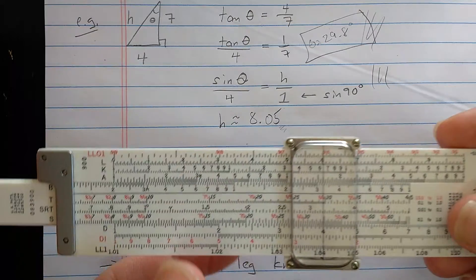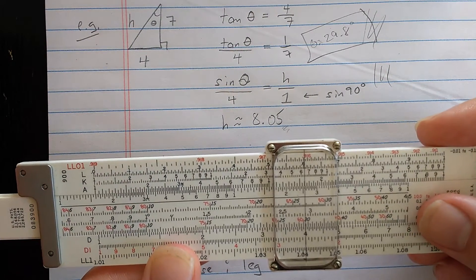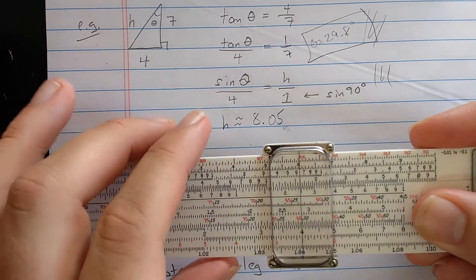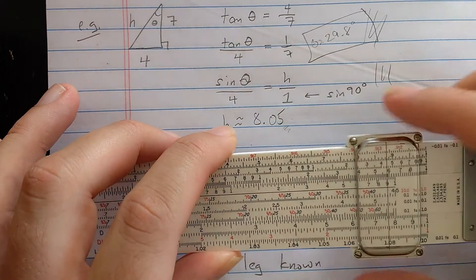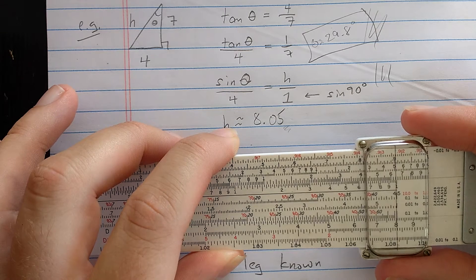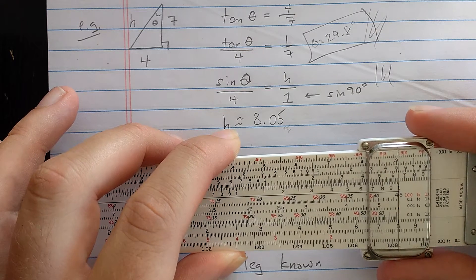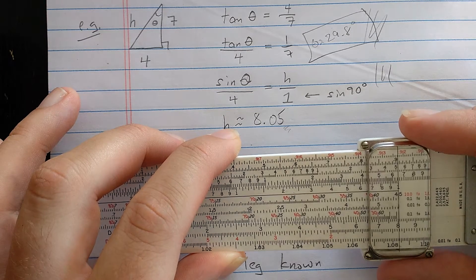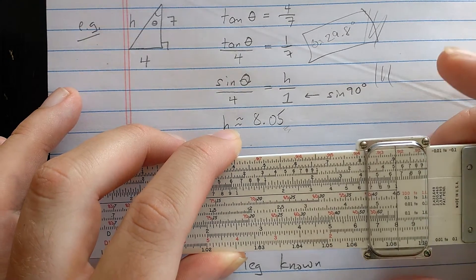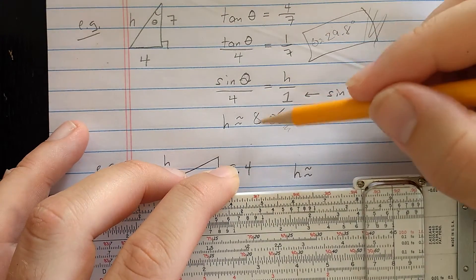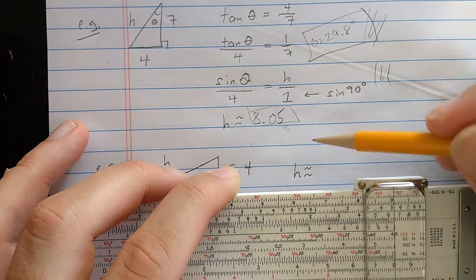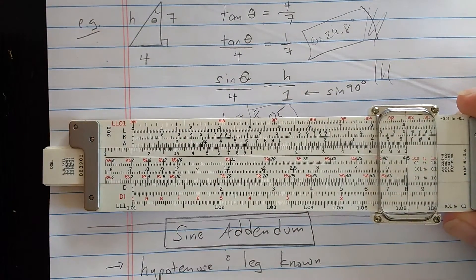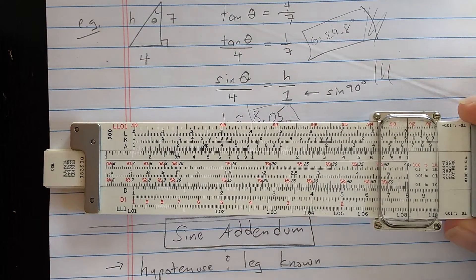So what I'm going to do is find the 29.8 on the S scale, which is about here, and then come out to the index of the S scale where I read the hypotenuse as usual. I read that as about 8.05. That last digit is usually a guess, especially on the 5-inch slide rule.